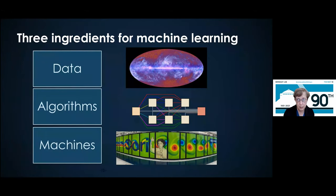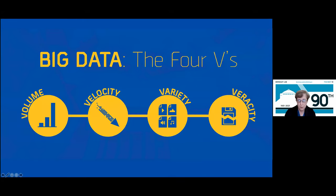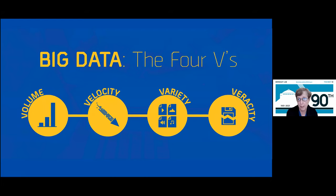Generally speaking, there are three things we need for machine learning to work: a lot of data, algorithms, and very fast machines. We sometimes talk about all the data coming out of science as the big data tsunami. More specifically, you can talk about the volume of the data, the speed at which it's coming — so fast you can't even save it to disk — the variety, where you might combine different datasets, and the veracity, since a lot of scientific data is very noisy. We have to use algorithmic techniques to filter through and figure out what is accurate.